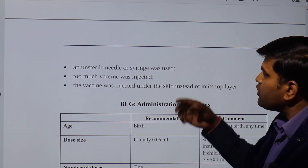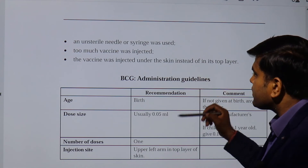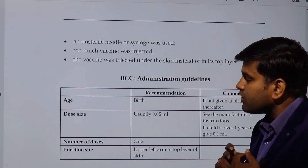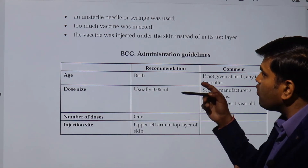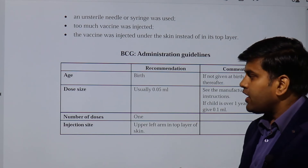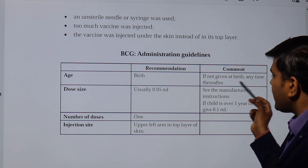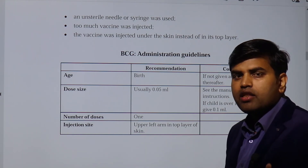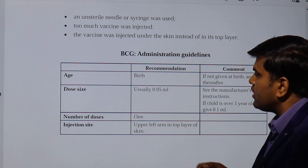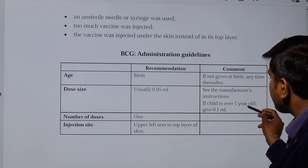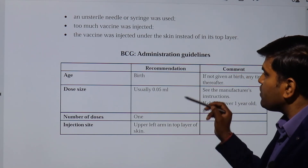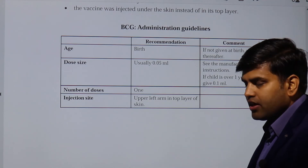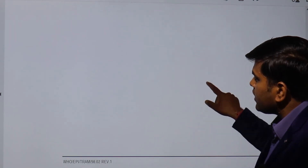Lymph node enlargement or abscess can occur due to a non-sterile needle or syringe, too much vaccine being injected, or the vaccine being injected subcutaneously instead of intradermally. Administration guidelines: BCG should be given at birth; if not, as soon as the child comes to a healthcare facility. The dose is 0.05 ml for infants; 0.1 ml for children over one year old. The number of doses is a single injection into the upper left arm intradermally.